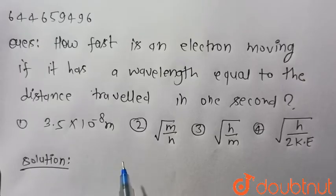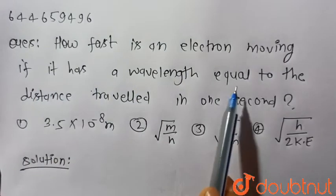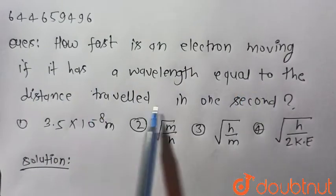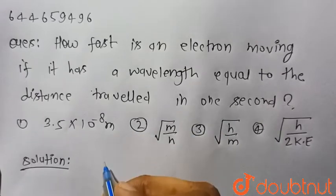Hello everyone, consider the given question. How fast is an electron moving if it has a wavelength equal to the distance travelled in one second? These four options are given, so we have to find which one is correct.